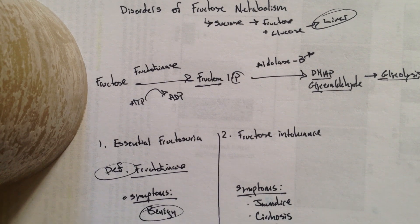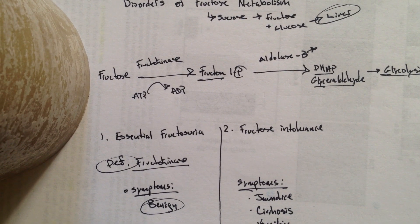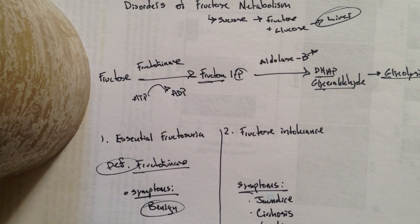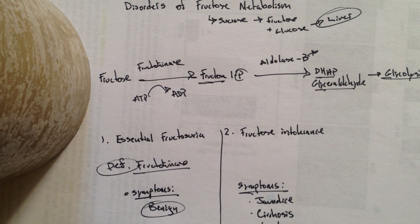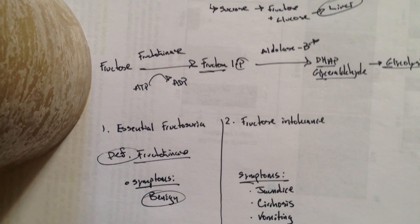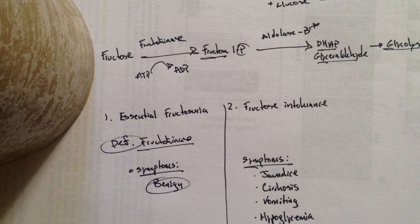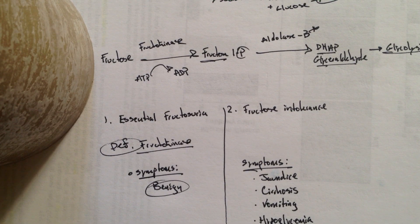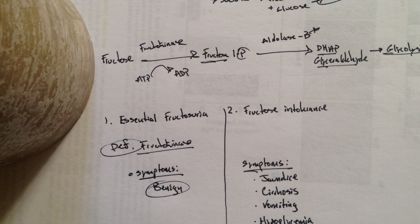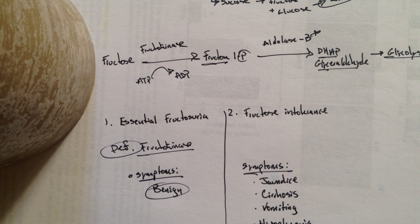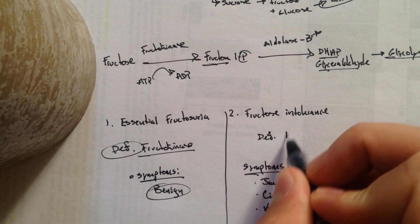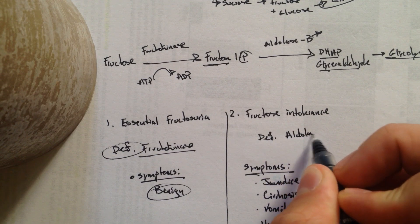So a second clinical vignette that you can have though is that the baby is not healthy. It's very sick. It has jaundice. It's vomiting. You run some tests. You see that it's hypoglycemic. And you're going to start to think, okay, this isn't essential fructosuria. This is quite possibly fructose intolerance. And when you're fructose intolerant, you have a deficiency in aldolase B.